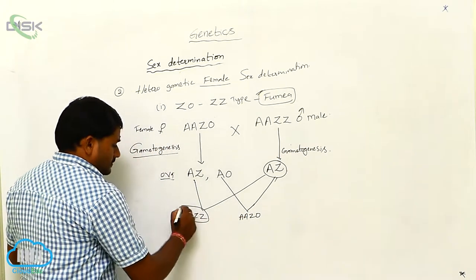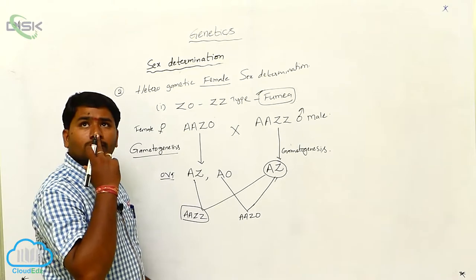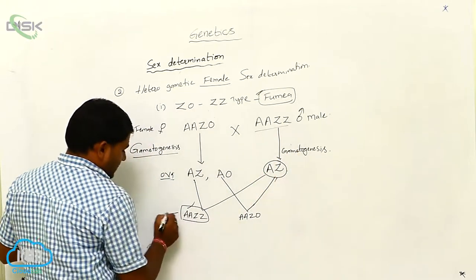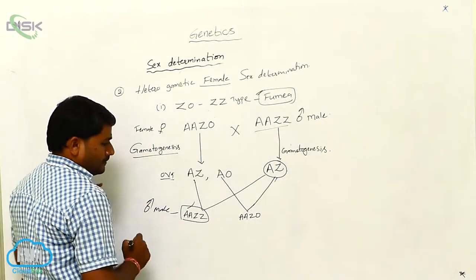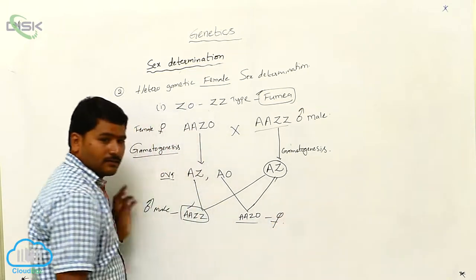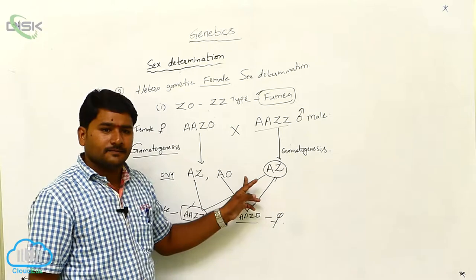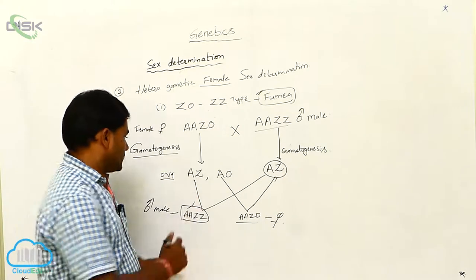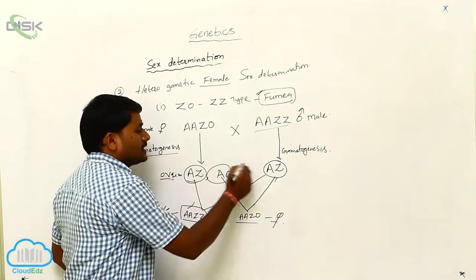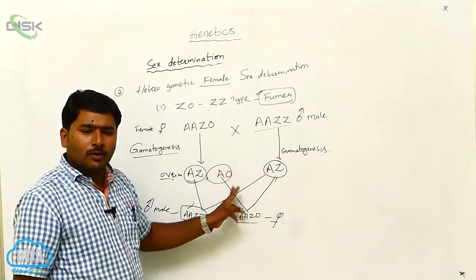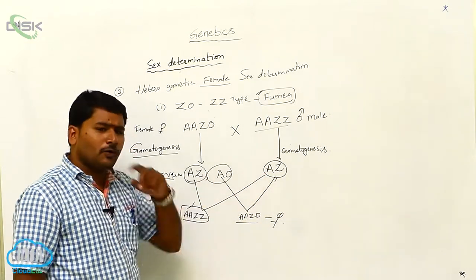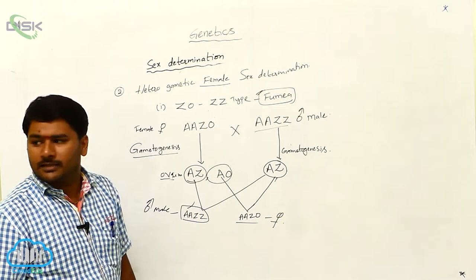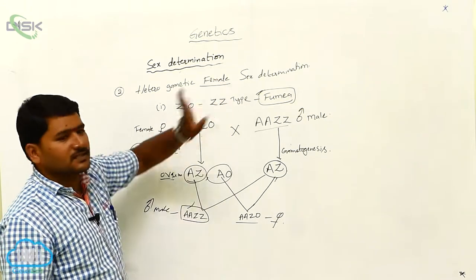This will develop into A, A, Z, Z — which is nothing but male. And A, A, Z, 0 is nothing but female. So how is sex determined here in the heterogametic female? Sex is determined by the type of ovum. Because sperms are the same, ova are different. What type of ova fuse with the sperm will decide the sex. This is called heterogametic female sex determination.